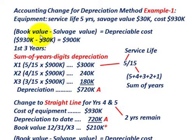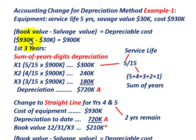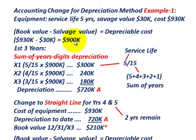What we have to start with is we take our book value minus our salvage value — that's going to equal our depreciable cost. We start out with the cost of the equipment at $930,000, then subtract the salvage value of $30,000. So our depreciable cost is going to be $900,000.